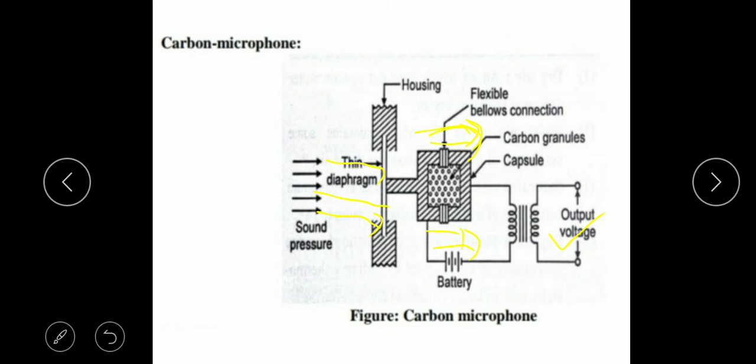Because of that, the carbon granules resistance will change. When the resistance of the carbon granules changes, the current flowing through the circuit also will change. From that change in current or change in resistance, we can identify the sound pressure which acted on the thin diaphragm. This is how the carbon microphone works to measure sound pressure.